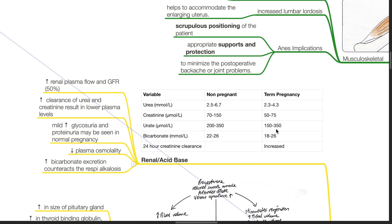In non-pregnant patients, bicarbonate is 22 to 26 mmol/L and decreases to 18 to 26 mmol/L in pregnancy. Twenty-four-hour creatinine clearance is increased in term pregnancy.